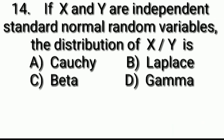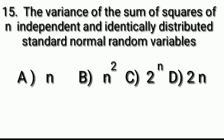Question 14: If x and y are independent standard normal random variables, the distribution of x/y is Cauchy. Options: second Laplace, third beta. Answer: Option A, Cauchy. Question 15: The variance of the sum of squares of n i.i.d. standard normal variables — Options: A: n, B: n², C: 2ⁿ, D: 2n. Answer: Option D, 2n.